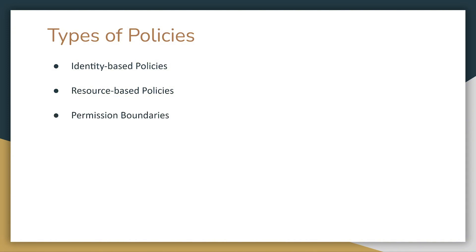Principals can be in the same account as the resource or in other accounts. The next type is permission boundary. This policy determines the maximum permissions that identity-based policies can grant to an entity, but it doesn't grant permissions itself. We also have organization service control policy, or SCP, which determines the maximum permissions for account members of an organization or organizational unit.